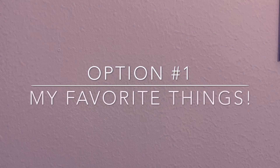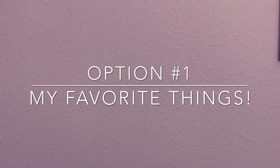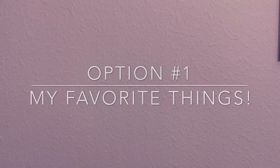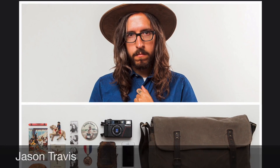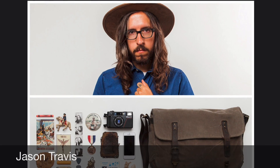Option number one. This activity is called My Favorite Things. Basically, you're going to go around the house and search for your favorite toys, your favorite activities, your favorite games, your favorite clothes, your favorite foods — anything that you really love. This project is inspired by an artist named Jason Travis.